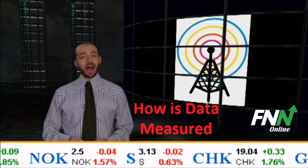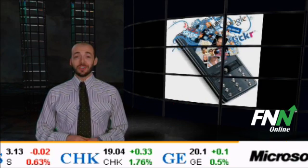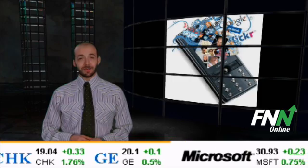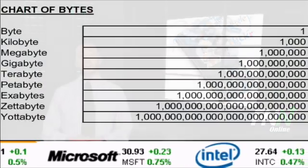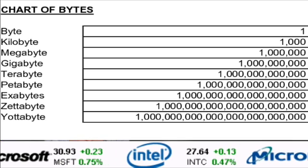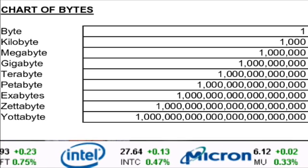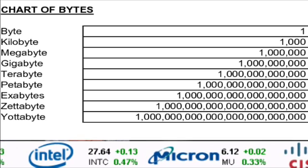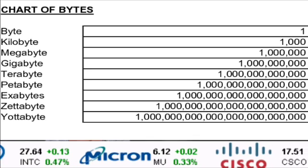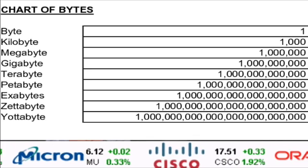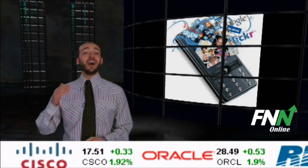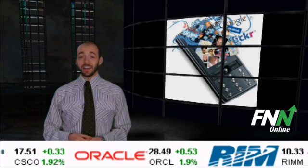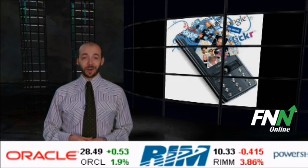Now, how is data measured? Well, just like any other computer-based storage, this uses the bytes system — and that's bytes, b-y-t-e-s. There are 1000 bytes in a kilobyte, 1000 kilobytes in a megabyte, and 1000 megabytes in a gigabyte. There are 1000 gigabytes in a terabyte, and it keeps going on and on with petabytes and exabytes and so forth.